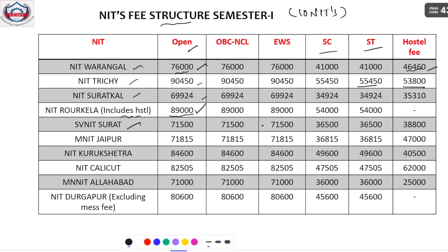Coming to NIT Surat, here are the fee structure details. Next, coming to Kurukshetra, Calicut, Allahabad — all details have been given. Coming to NIT Durgapur, this is the fee structure, but it is excluding the mess fee. Hostel fee is included in this 80,600, but mess fee is not given in the PDF. Roughly around 25,000 will be there for mess, so adding that gives approximately 1,05,600 rupees as the total fee for NIT Durgapur for an open category student. Please keep in mind that whatever the course may be — structural engineering, VLSI, or any M.Tech course — the fee structure remains constant.